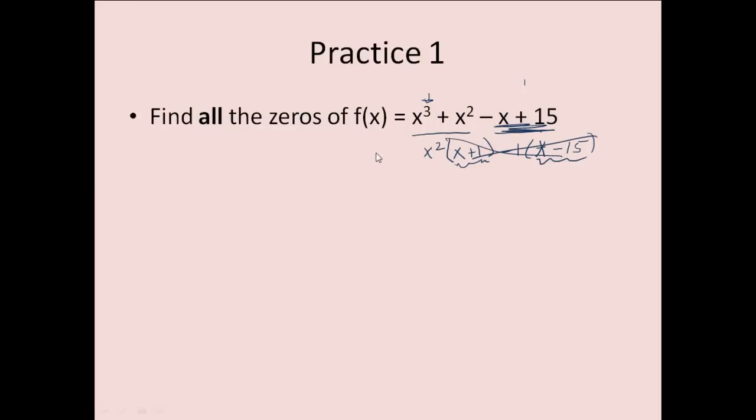I'm going to try the rational zero theorem then, which says I need to take my factors of 15. So all my factors of 15 are ±1, ±3, ±5, and ±15. And I need to put them over the factors of my leading coefficient, which in this case is 1. So I'll have all of these over 1. That means any rational zero I have is either going to be positive, negative 1, positive, negative 3, positive, negative 5, or positive and negative 15.